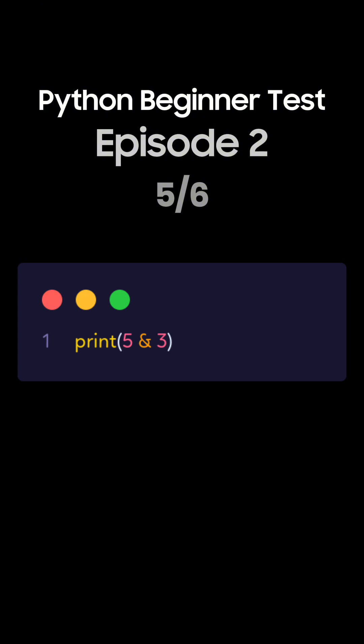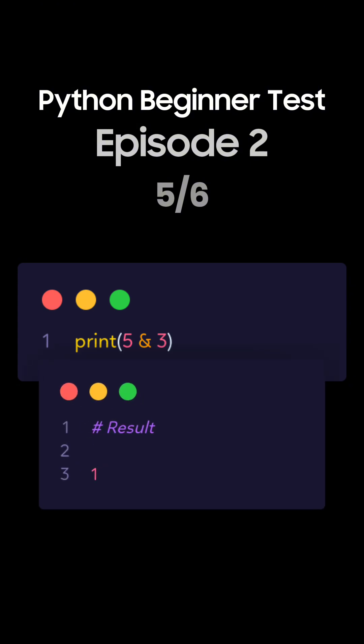Question 5. What's the output of this Python code using bitwise operators? This is the correct answer. The bitwise and operation between 5, which is 101 in binary, and 3, which is 011 in binary, results in 1, which is 001 in binary.